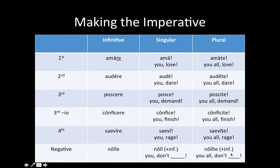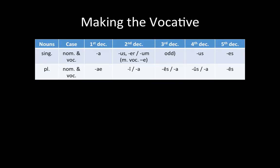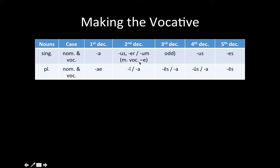In order to command people to do things, it helps to be able to talk to them. In Latin, we put things in the vocative, which comes from 'voco, vocare' — 'to call.' Thankfully, this is also pretty easy. In all but one instance, the vocative is exactly the same as the nominative. The only exception is in the second declension masculine: nouns ending in -us or -er change to an -e in the singular vocative. All the rest are exactly the same as the nominative.